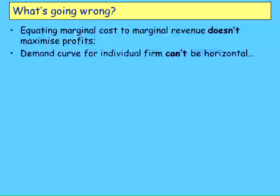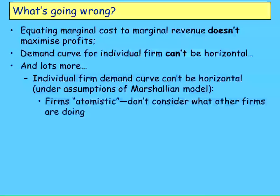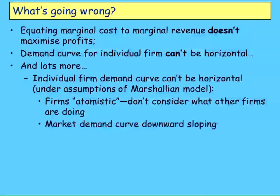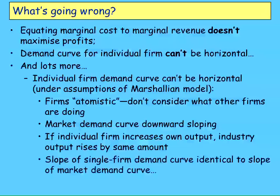Equating marginal cost and marginal revenue does not maximize profits — that is a mathematical fallacy. And the demand curve for an individual firm can't be horizontal. What you're taught in micro is provably false. The individual firm's demand curve can't be horizontal because of the assumptions of the model. Back when I was taught this 40 years ago they said firms are 'atomistic' — they don't use that term anymore. These days they say 'price takers.'